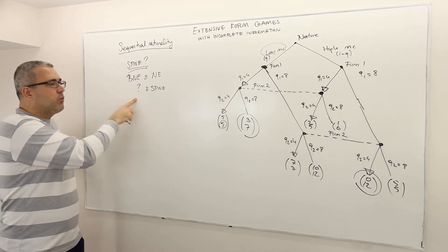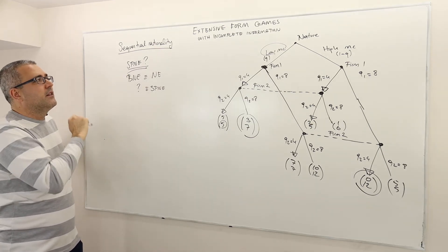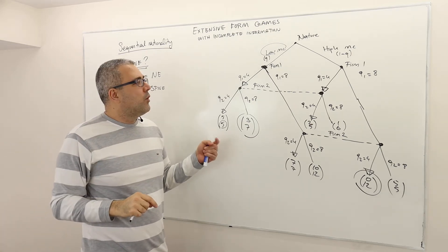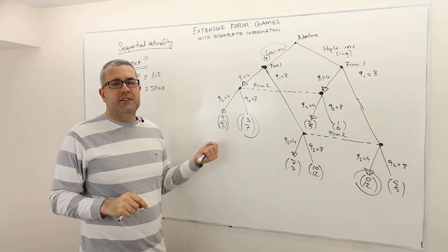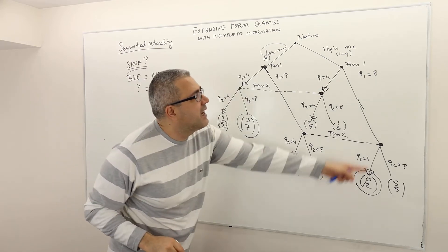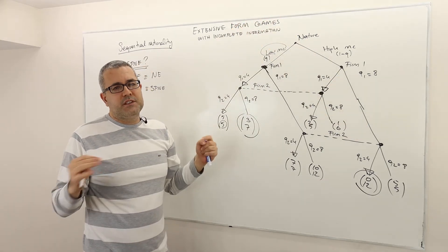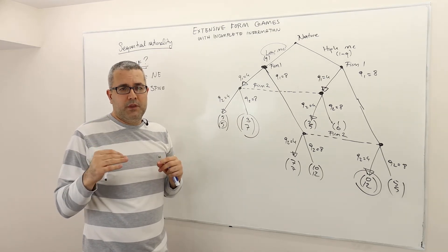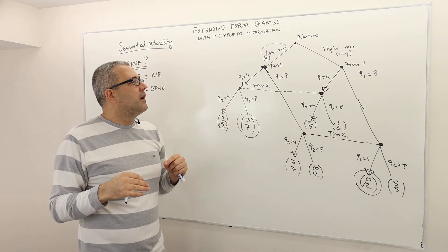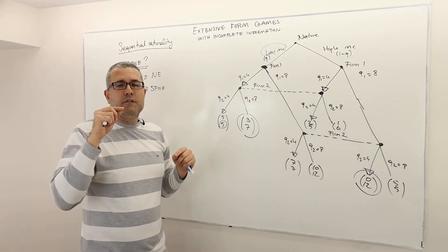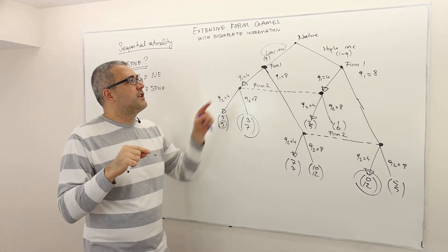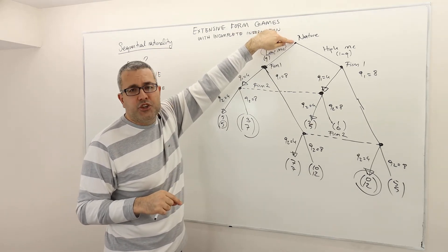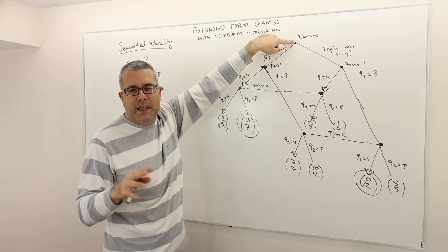Well, before we learn the equivalents of SPNE under incomplete information, let's see what subgames we have in this game. The entire game is a subgame, right? But it's not an interesting subgame, we need to look at the proper subgames, the subgames that are starting from a decision node which is not the initial decision node. So here, the initial decision node is the nature's decision node.